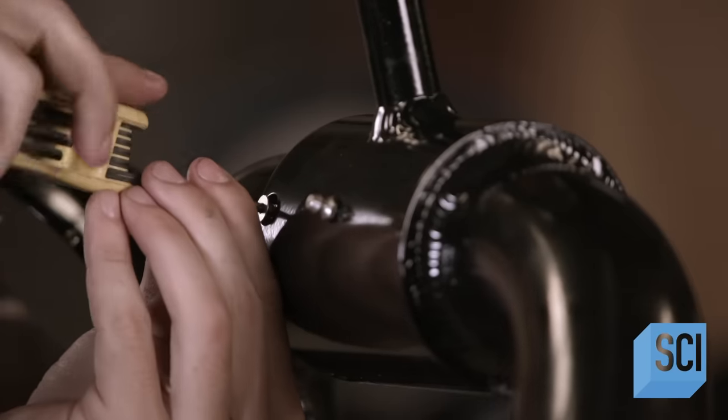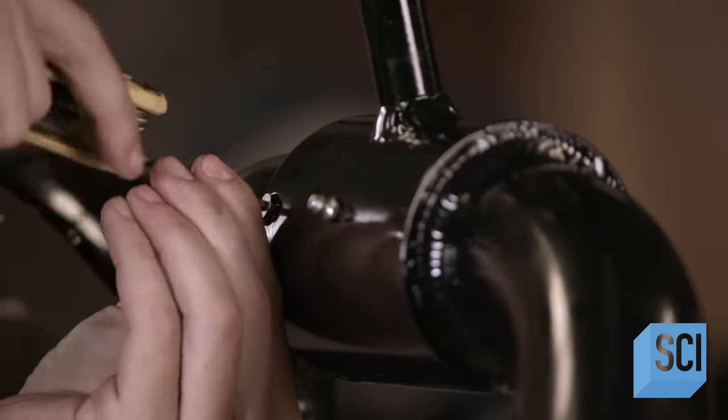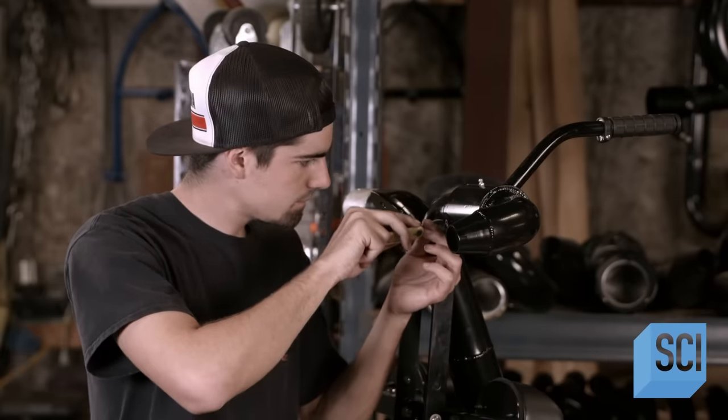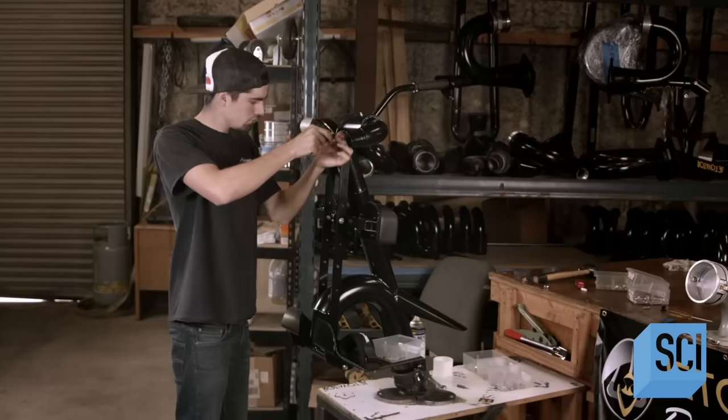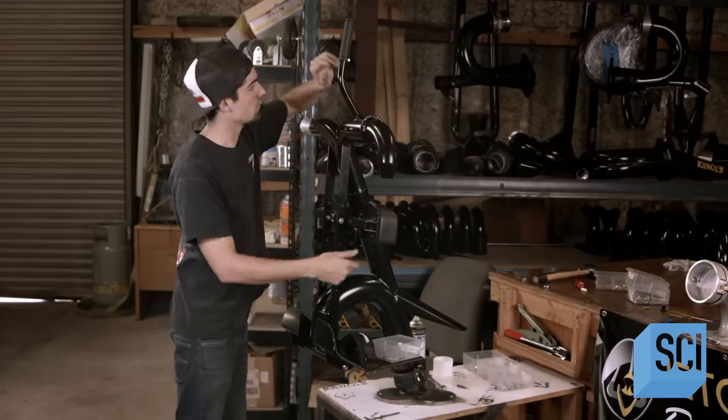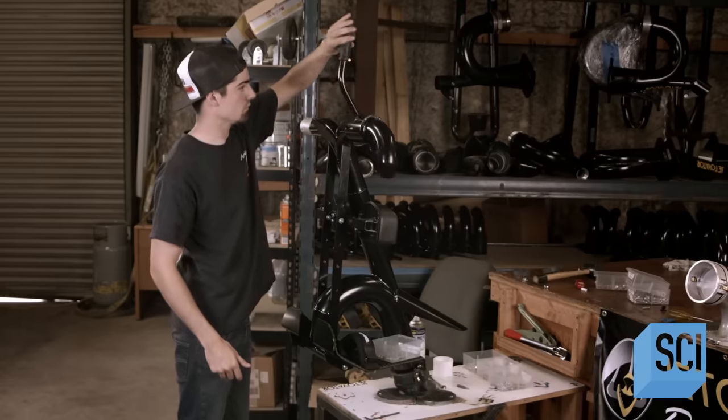To ascend, you pull back gradually on both of them simultaneously. To descend, you push forward on both. To spin, you move one forward and one back. And to do a backflip, you yank both control nozzles all the way back.